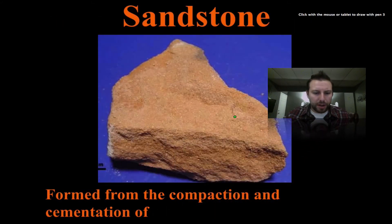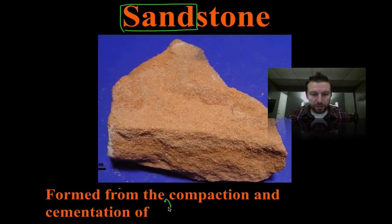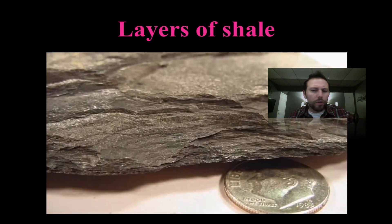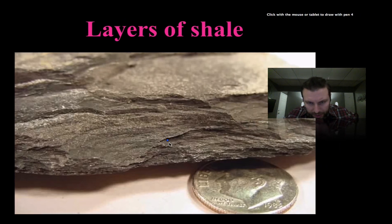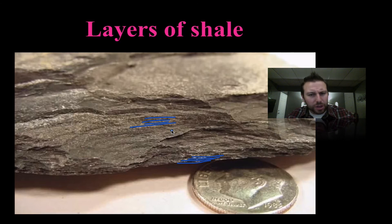Here we have sandstone — we can look at the name and confirm with our reference table that sandstone forms from sand. Looking at shale up close, notice the parallel layers here — very fine, parallel layers going across. Shale is made of very fine clay particles, which form very nice, thin, even layers.